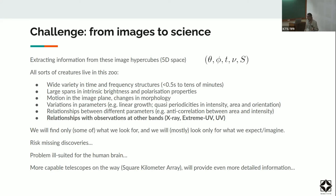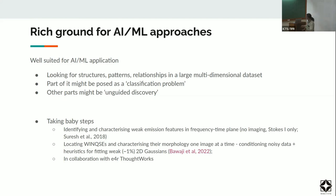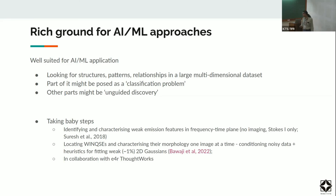We also have more capable telescopes on the way that will give us even more data. This is a problem extremely well suited for AI/ML applications — it's about finding structures, patterns, and relationships in large multidimensional datasets. Some aspects can be posed as classification problems; others require unsupervised discovery. We've been taking some baby steps ourselves, though so far limiting ourselves to three dimensions. Part of this work has been done in collaboration with the Engineering for Research group at ThoughtWorks.